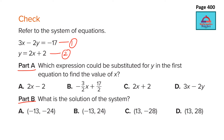Think about which variable is easier to substitute — just look at the coefficients. The coefficient of x in the first equation is 3, the coefficient of y is −2, the coefficient of y in the second equation is 1, and the coefficient of x is 2. So it is easy to substitute the value of y, plugging in y = 2x + 2 from the second equation into the first. The answer is C.